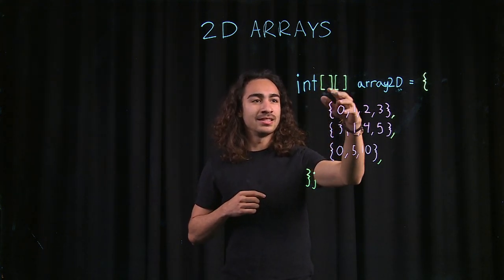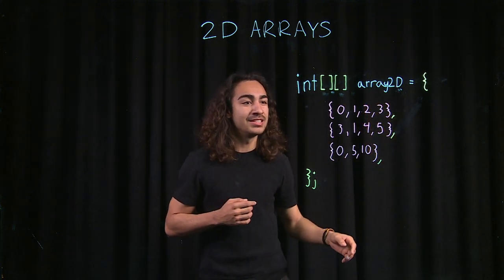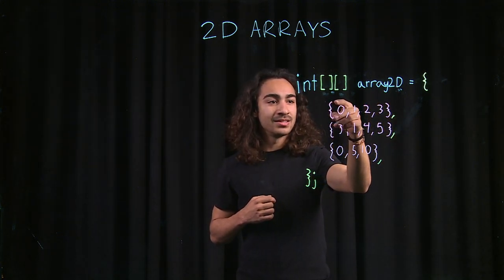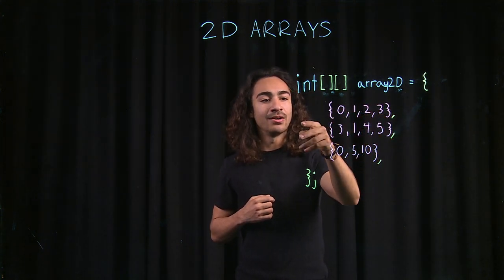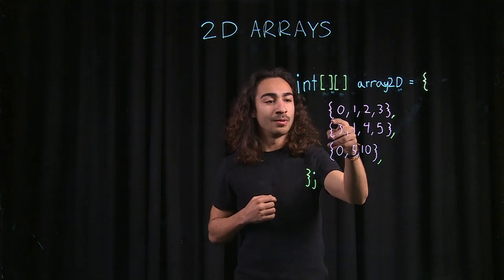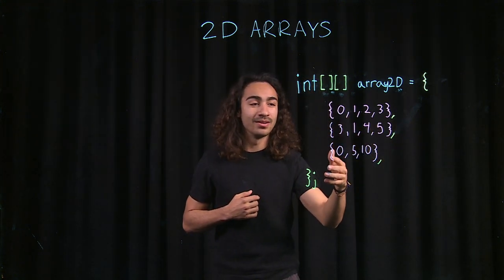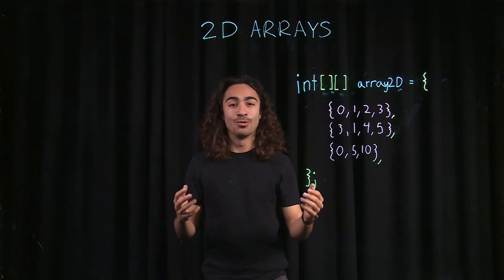And as you can see, in our 0th index of our array2d is my array1, which contains 0, 1, 2, 3. And our first index of our array2d is our second array that we had before. So, our two-dimensional array is just an array of arrays.